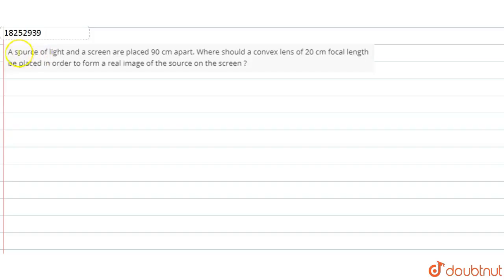In this question we have a source of light and a screen which are 90 cm apart. We need to find where to place a convex lens in order to form a real image of the source on the screen. The convex lens has a focal length of 20 cm.